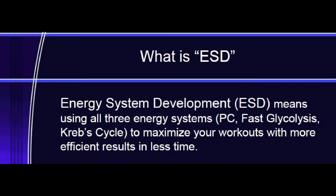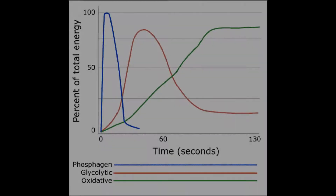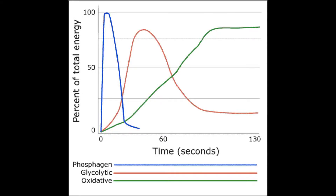ESD, or energy systems development, is a scientific approach to cardiovascular fitness training. ESD uses all three energy systems — the creatine phosphate, fast glycolysis, and Krebs cycle — to maximize your workouts with more effective results in less time.